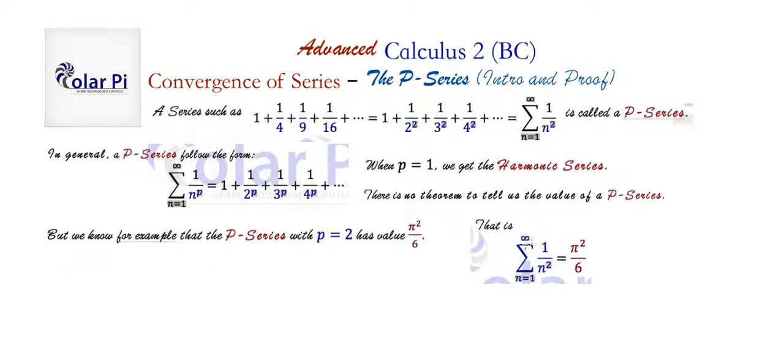But yeah, let's continue here. So as I just said, it's not clear how you can find the value of a particular P series. Now, a P series converges, always true, if P is greater than 1. So whenever P is greater than 1,